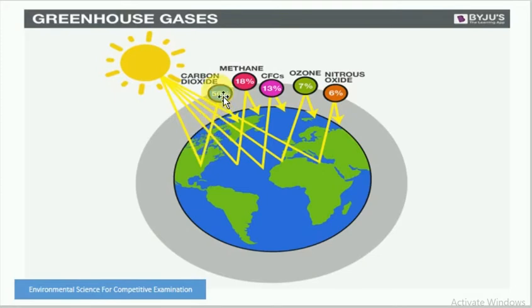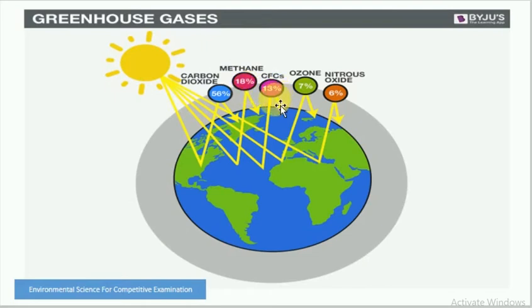The contribution of greenhouse gases in the atmosphere is broken down as follows: carbon dioxide 56%, methane 18%, chlorofluorocarbons 13%, ozone 7%, and nitrous oxide 6%.